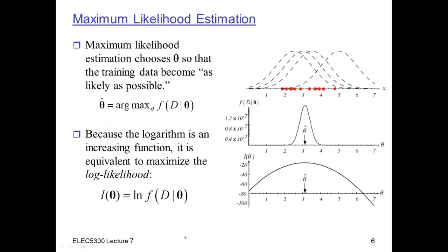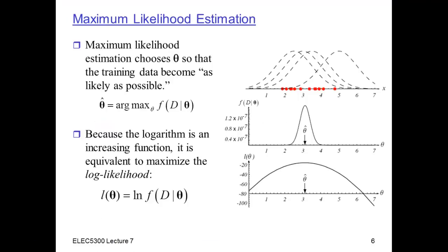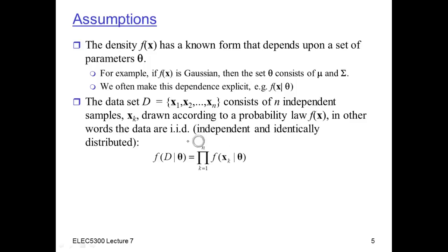Going back to the slides, this is what the diagram showed. The red points are the data, and the likelihood is the product of the distribution values at all those points. The reason we take the product is exactly because of the IID assumption — the likelihood of the entire dataset D is the product of the individual likelihoods.